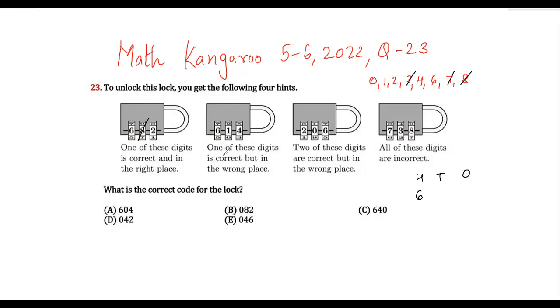So what does this question say? One of these digits is correct but in the wrong place. So if 6 was correct and was in the right place, then this statement becomes wrong. So that means the number that we are talking about is not 6.